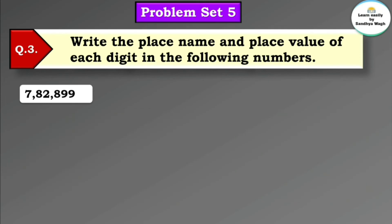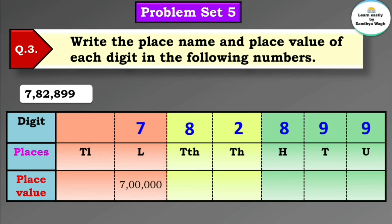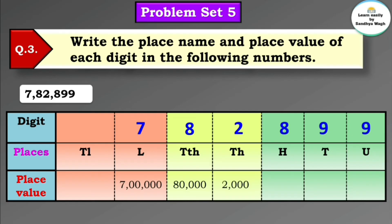Next number: 7,82,899. Let's arrange this number according to their places. 7 is in the lakhs place so the place value of 7 is 7 lakh. 8 is in the 10,000 place so its place value is 80,000. 2's place value is 2,000. 8's place value is 800. 9's place value is 90. And 9's place value is 9.